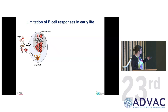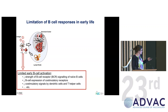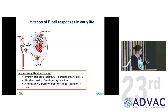Here you have the germinal center — the bar — with the extrafollicular response, the follicle, the antigen arriving, antigen-presenting cells, T cell–B cell interaction, and then migration into the germinal center. One key limitation is that B cell activation is limited: the strength of B cell receptor signaling is known to be lower, there are fewer co-stimulatory receptors, and fewer co-stimulatory signals from antigen-presenting cells and T helper cells. This is the first limitation to the B cell response.